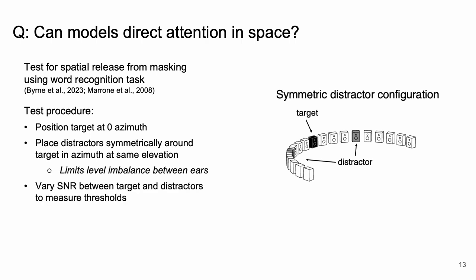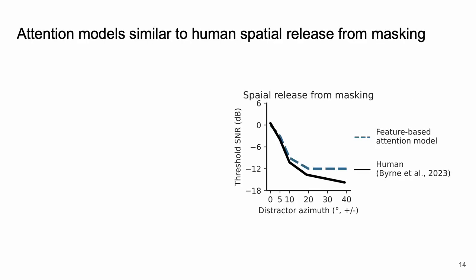Then we're going to measure thresholds by varying the signal-to-noise ratio between the target and distractor signal. Here the threshold for a given azimuth condition is going to be determined as the SNR that gives us chance performance on the word recognition task. When compared to existing human data we see our models learn spatial release from masking in a way that's quite similar to humans.